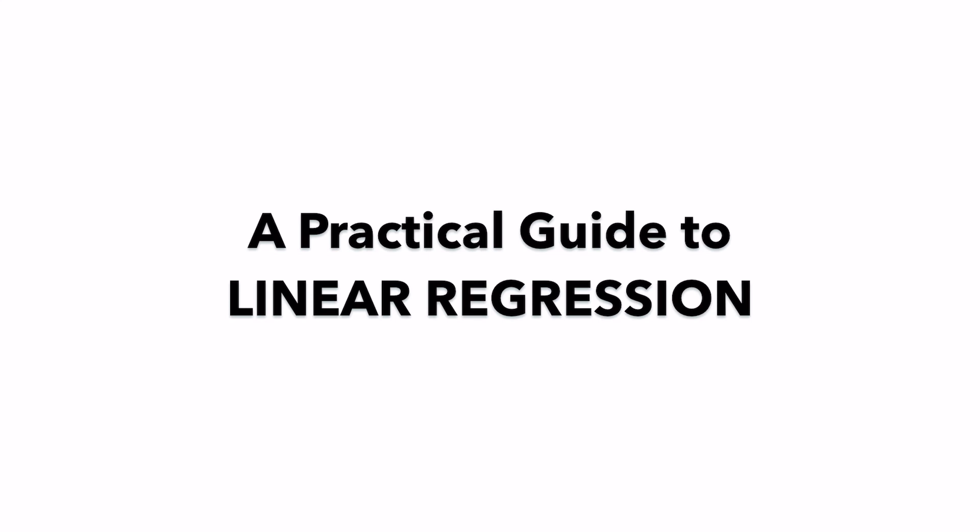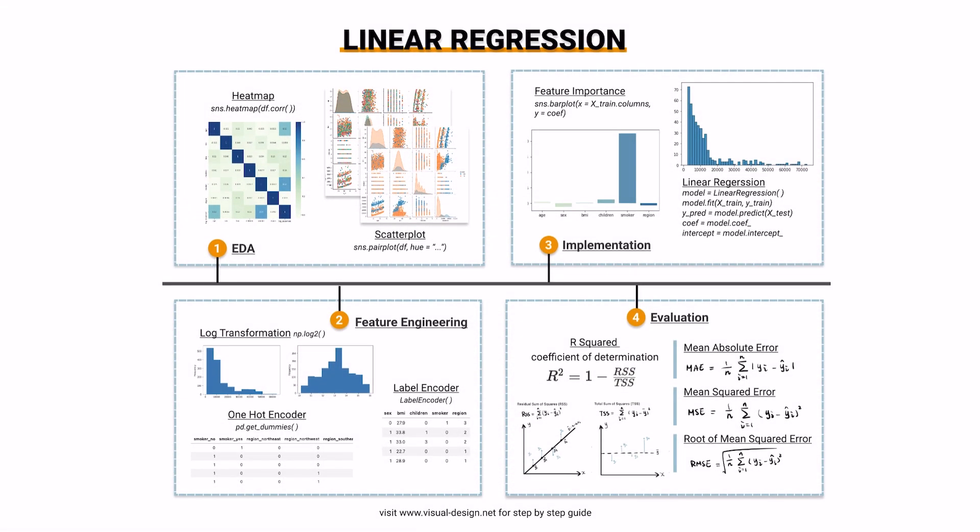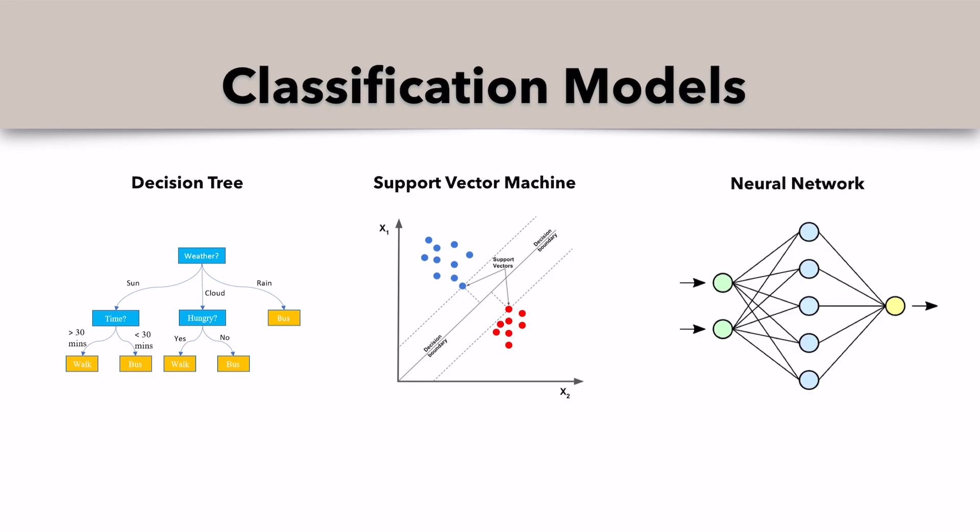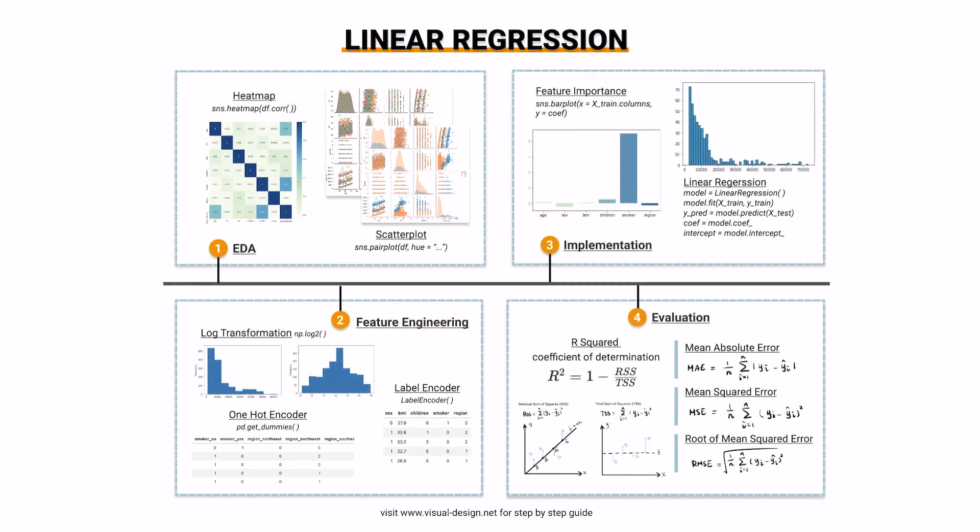Linear regression is a typical regression algorithm for numeric prediction. It is distinct from classification models such as decision tree, support vector machine, or neural network. Linear regression finds the optimal linear relationship between independent variables and dependent variables, then makes prediction accordingly. To put linear regression into practice,